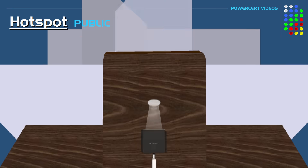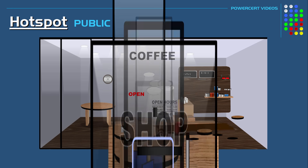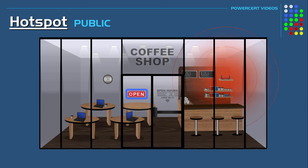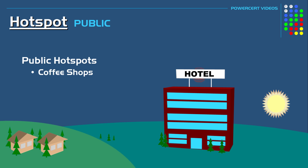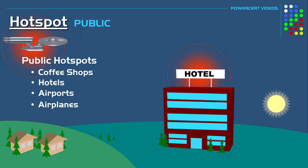A hotspot could be either public or private. A public hotspot location will be things like a coffee shop. Coffee shops are very common in having a hotspot so that their customers can have internet access using their wireless device. Other common public hotspots would be things like hotels, airports, and even on airplanes.